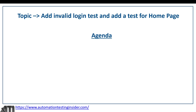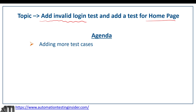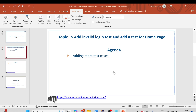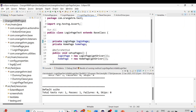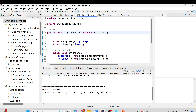Today we'll add a couple more test cases for invalid login in the login page test, and we're going to create one more test for the home page as well. I'll show you practically, so let's get started. I'll take you to Eclipse where we've been working on this OrangeHRM project as part of this framework series. Let me quickly recap what we have done so far.